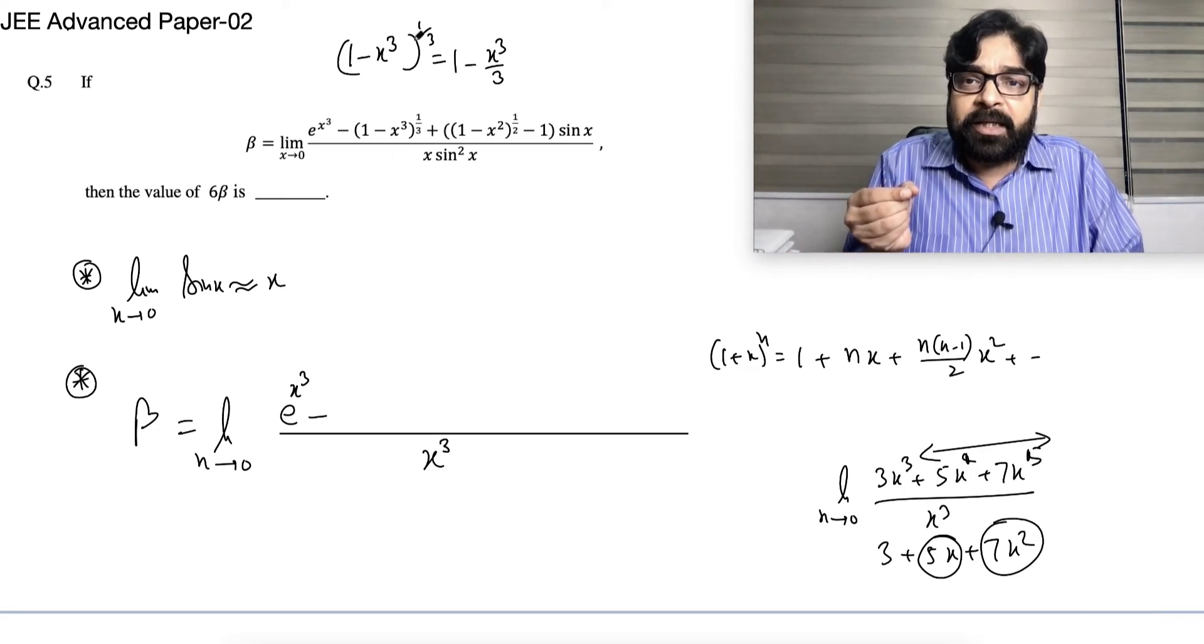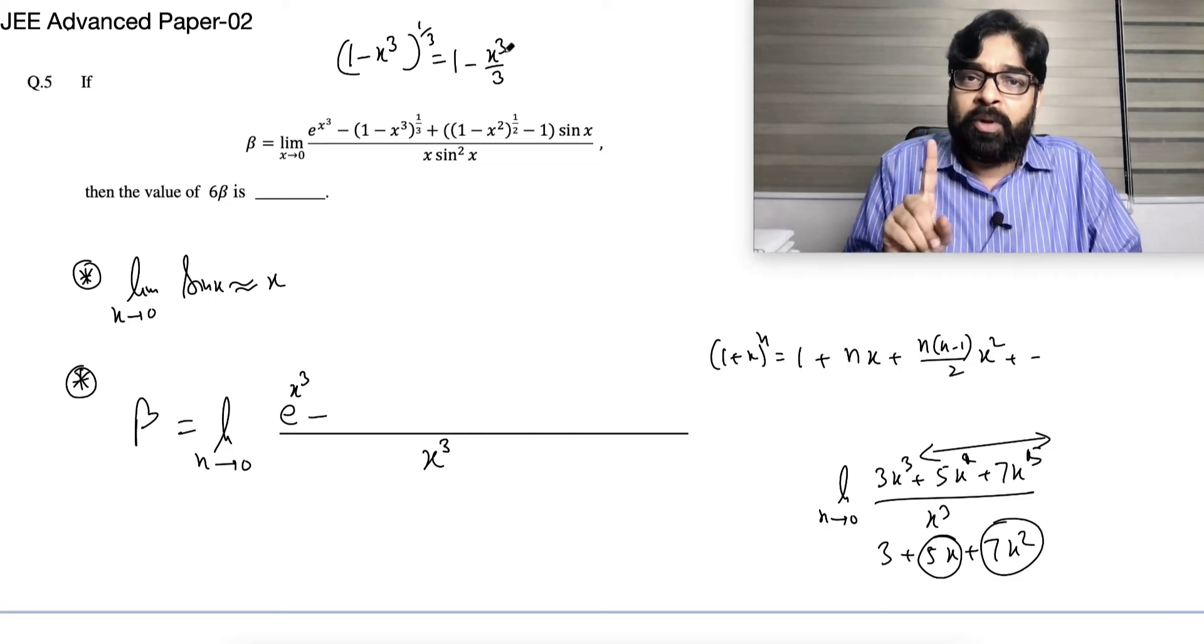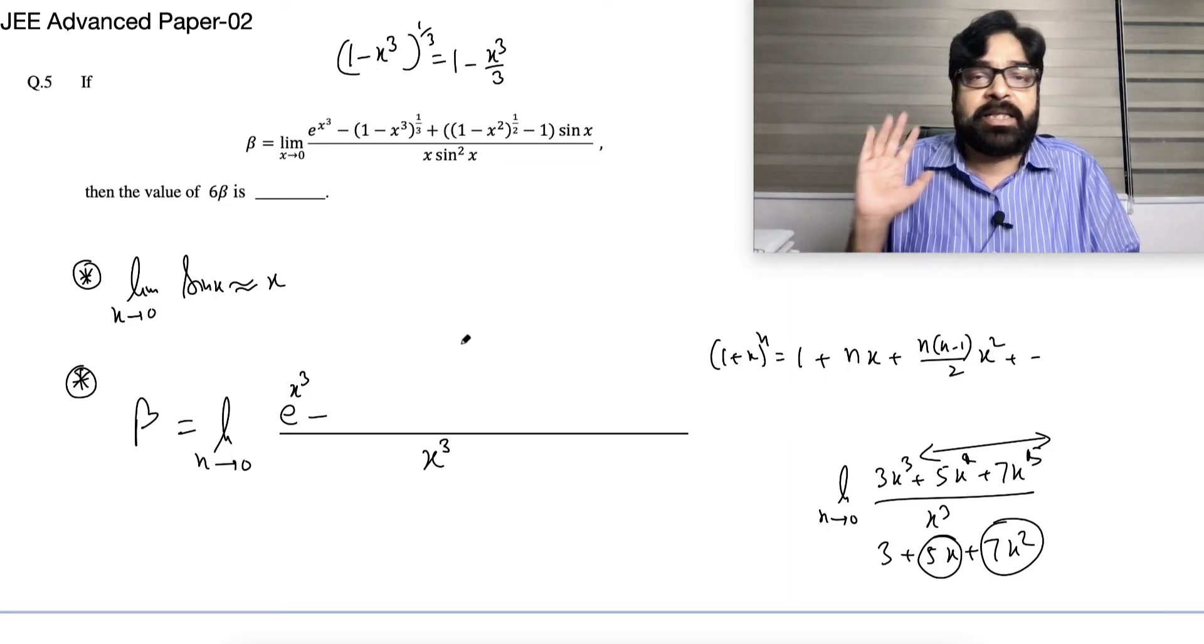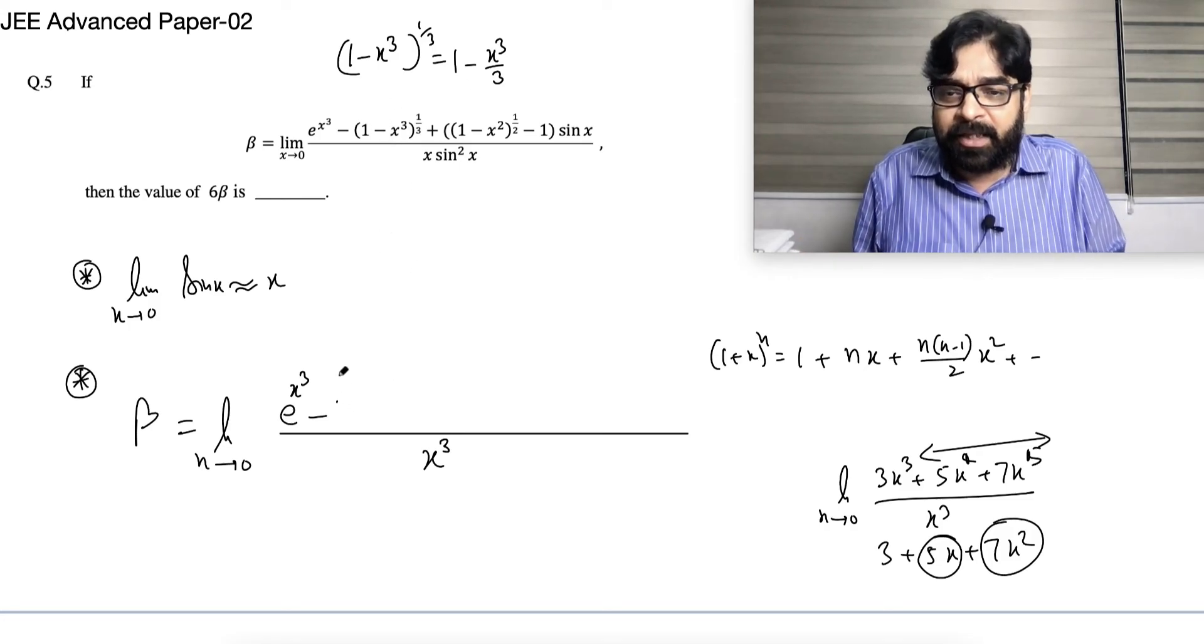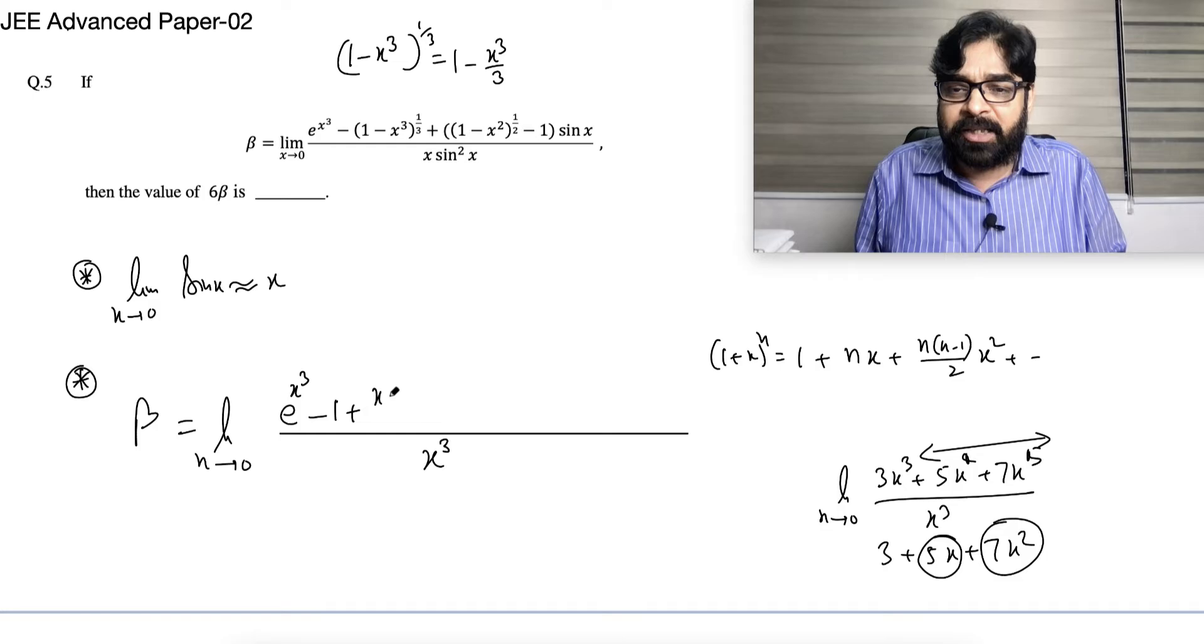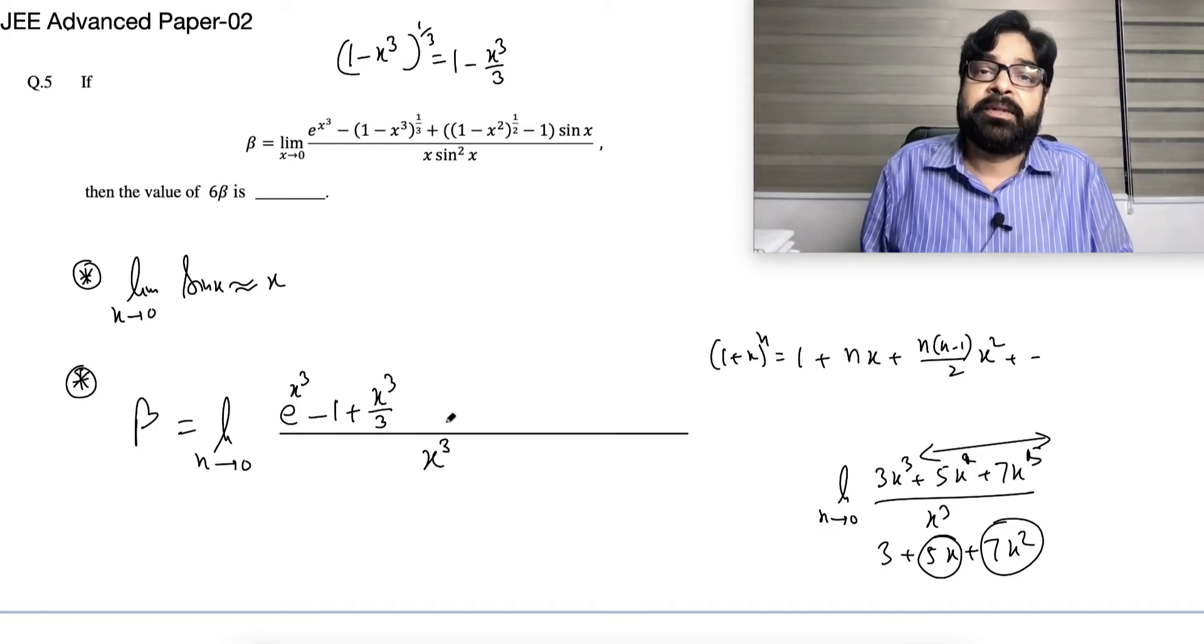You may be wondering, sir, this is equal to this? No, no, no, when x near to 0, I can write this one as this. So let's write it, so minus, in place of this I am writing this, so minus (1 + x³/3). Did you understand? Yes.